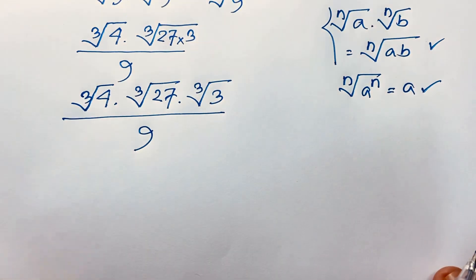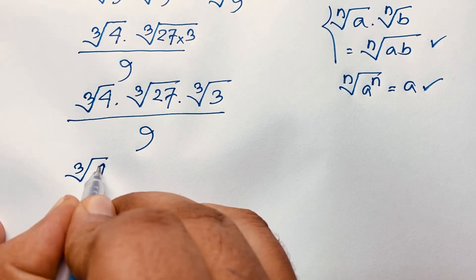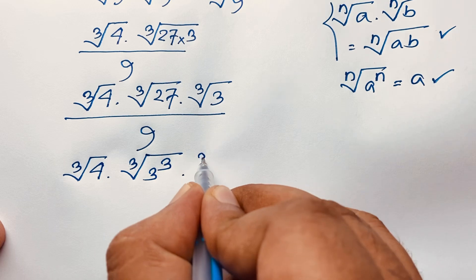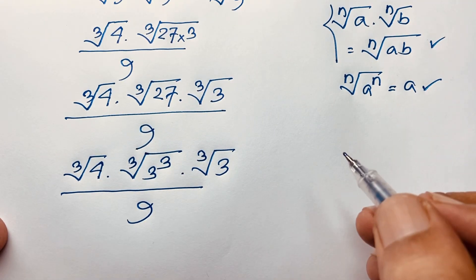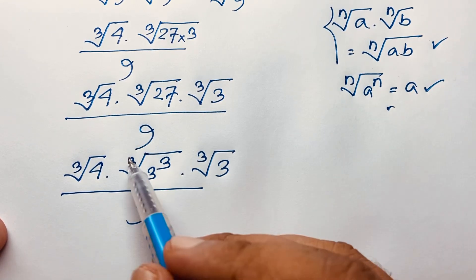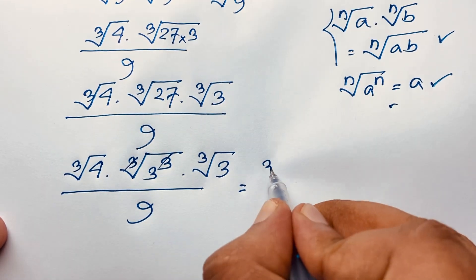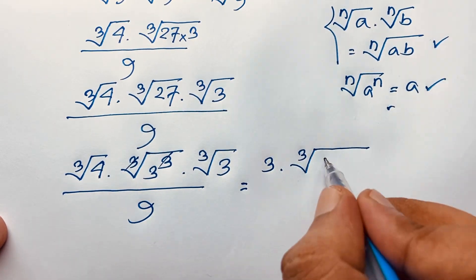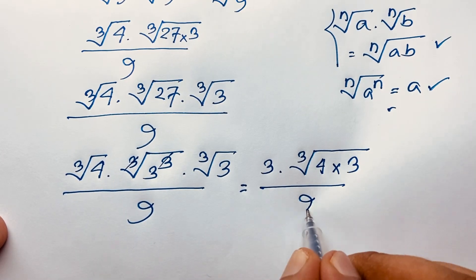Now, cube root 4 and cube root 27 — since 27 equals 3 to the power 3, the cube root of 27 equals 3. So we have 3 times cube root 3 over 9, and applying the formula again, the 3 cancels, giving us cube root of 4 times 3 over 9.